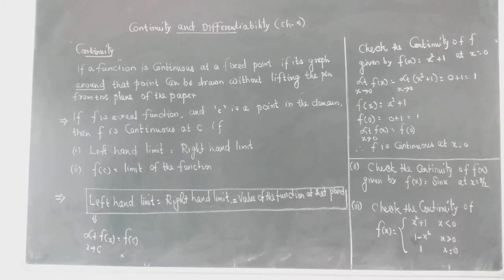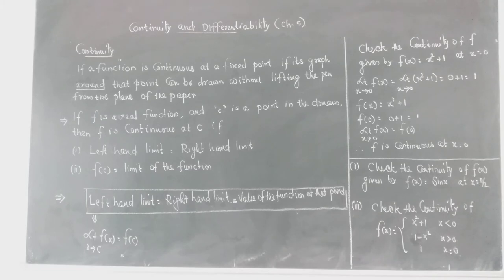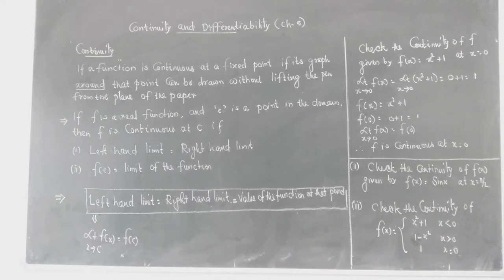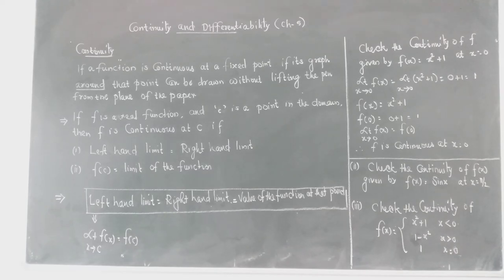There is an example. Check the continuity of f given by f(x) = x² + 1 at x = 0. We need to verify whether the function is continuous at x = 0. We begin by finding the limit of the function. Since f(x) = x² + 1 is a polynomial function, we can easily find the limit by direct substitution.